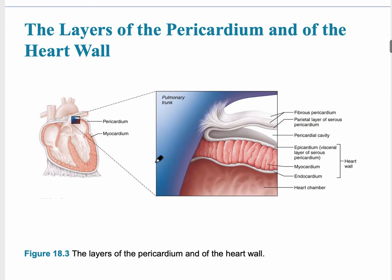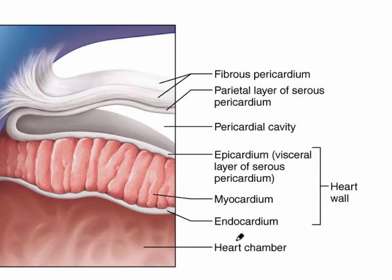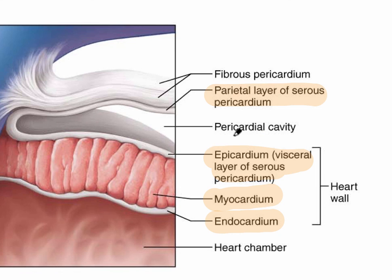This slide shows a region of the left atrium wall. The endocardium is the inner layer touching the blood, the myocardium is the middle layer where cardiac muscle is found, and the epicardium is the outermost layer. Between the epicardium and the parietal layer is the pericardial cavity. Normally there is only a small amount of fluid there — if it builds up, that is called pericardial effusion.